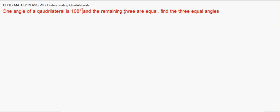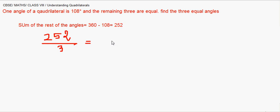So sum of the rest of the angles will be 360 minus 108 and if I do that I'm getting 252. Now this 252 is equally to be divided into the rest of the three so 252 divided by 3 will give us the answer. If I do this I'm getting 84 degrees so each of the remaining angles of the given quadrilateral will be 84 degrees.